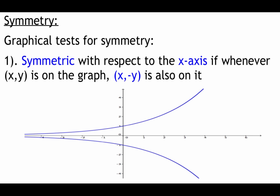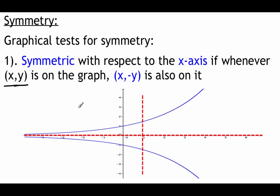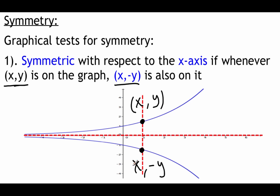We're going to look at symmetries graphically. Graphs are made up of a bunch of different ordered pairs, so we're going to use those ordered pairs to help us distinguish between the three different types of symmetry. The first type is x-axis symmetry. We describe x-axis symmetry as: having the general point (x, y) on the graph means we also have to have the point (x, -y). If we flip across the x-axis, we're dealing with a negative y value.